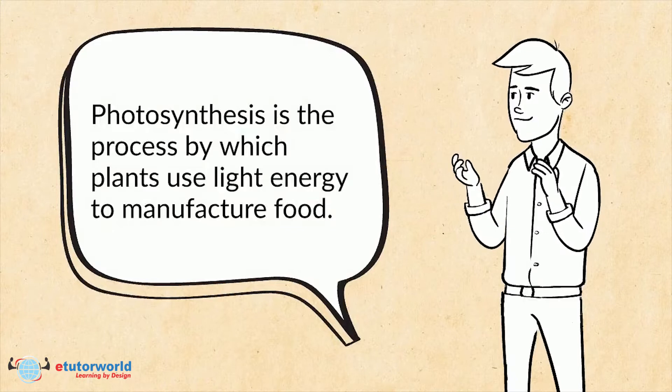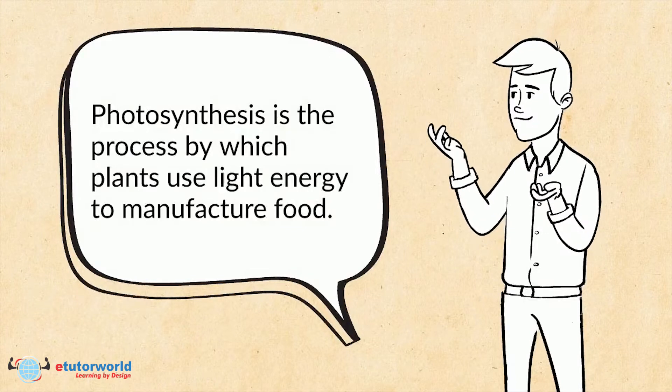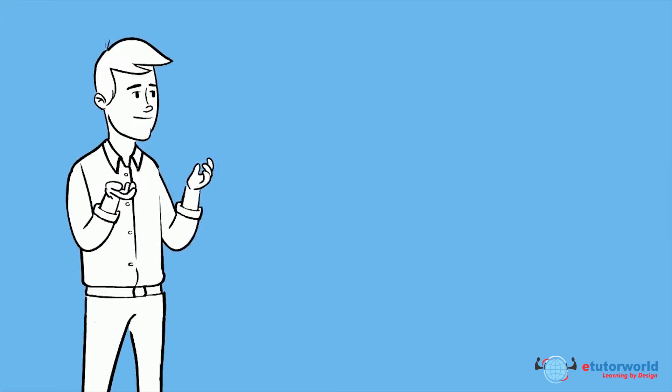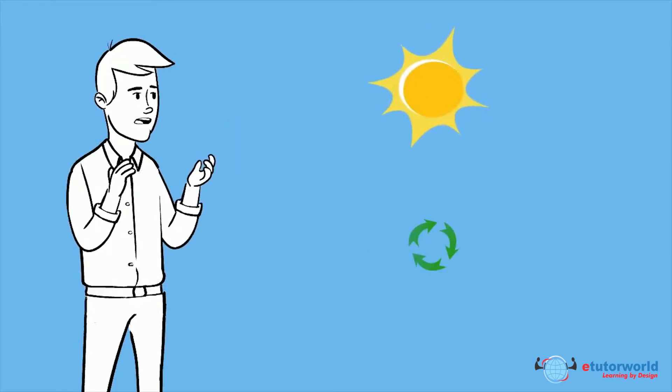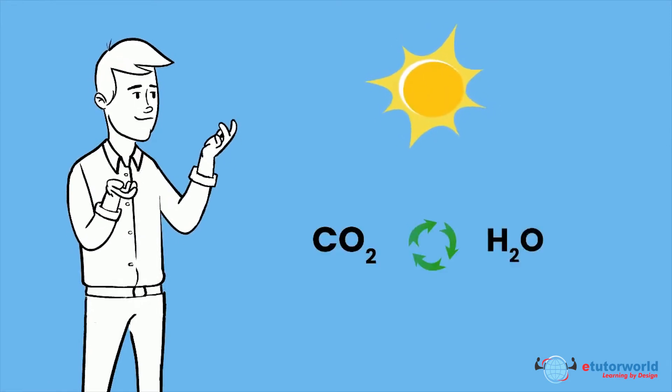Photosynthesis is the process by which plants use light energy to manufacture food. Sunlight is used to complete a chemical process between carbon dioxide and water to produce glucose.